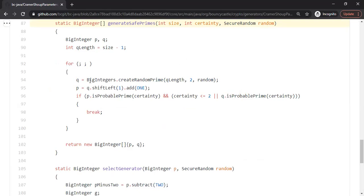So what they do here is, as I mentioned earlier, they generate first a prime number q using their create random prime function. And if you look at q length, what is q length? Q length is size minus 1.